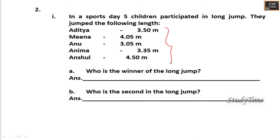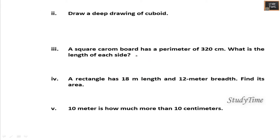Next, in a sports day five children participated in long jump. Who is the winner of the long jump? 4.50 meter is the highest, so Ansur is the winner. Who is second in the long jump? It is 4.05, that is Meena.